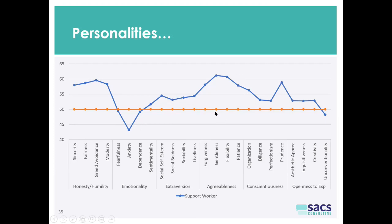But look at these agreeableness scores. Agreeableness is about not being angry and being reasonable and approachable, and these scores are very strong. Forgiveness — people not holding grudges; gentleness, not being harsh on people; flexibility, not having to have things your own way; patience, not being angry. Those are very favourable characteristics.